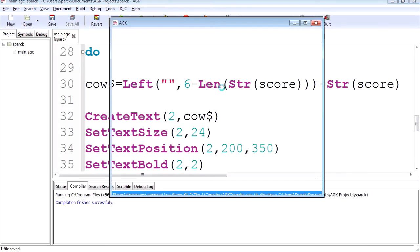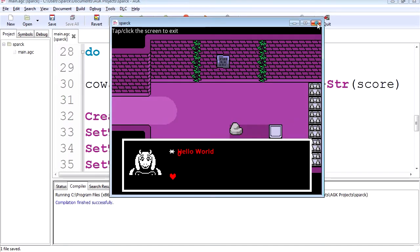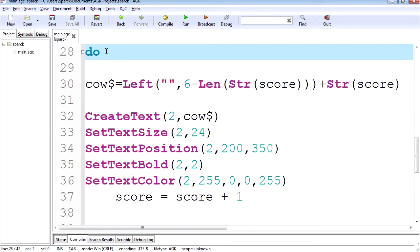So let's run this. Fail to add text2 because this already exists. Okay. All right. That's true. Because we are inside the do, this keeps trying to create this text over and over again. To fix that, we have to create our text before this.